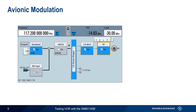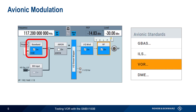To access the different avionics modulation types on the SMBV100B, including VOR, first select the modulation tile, then choose VOR from the Avionics Standards group of available modulation types.